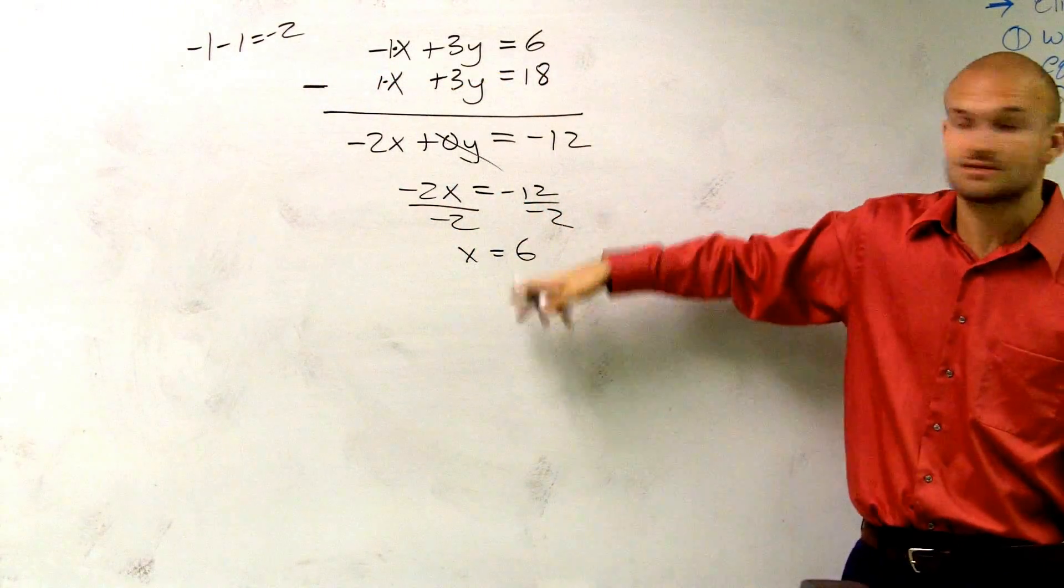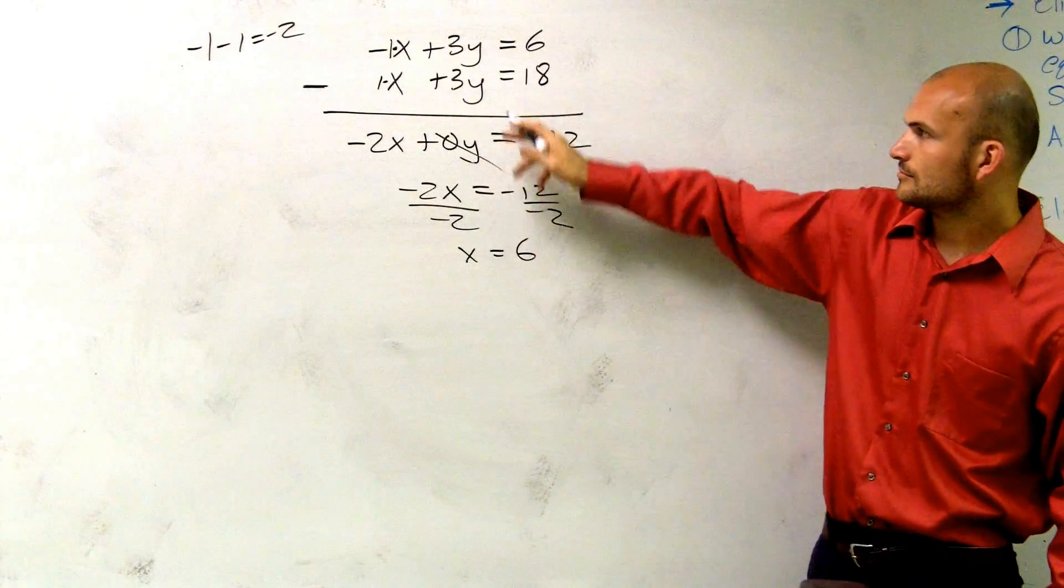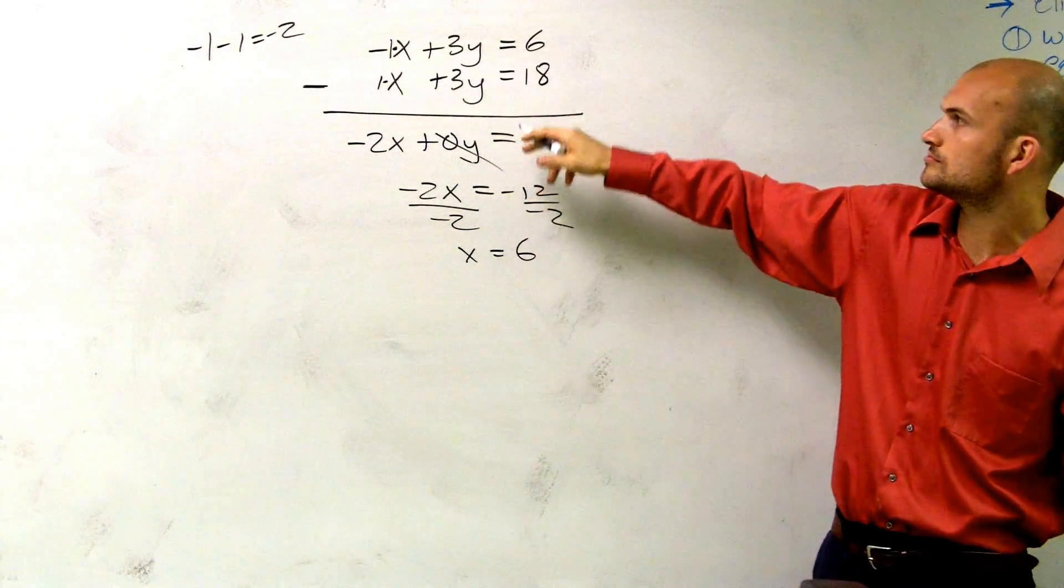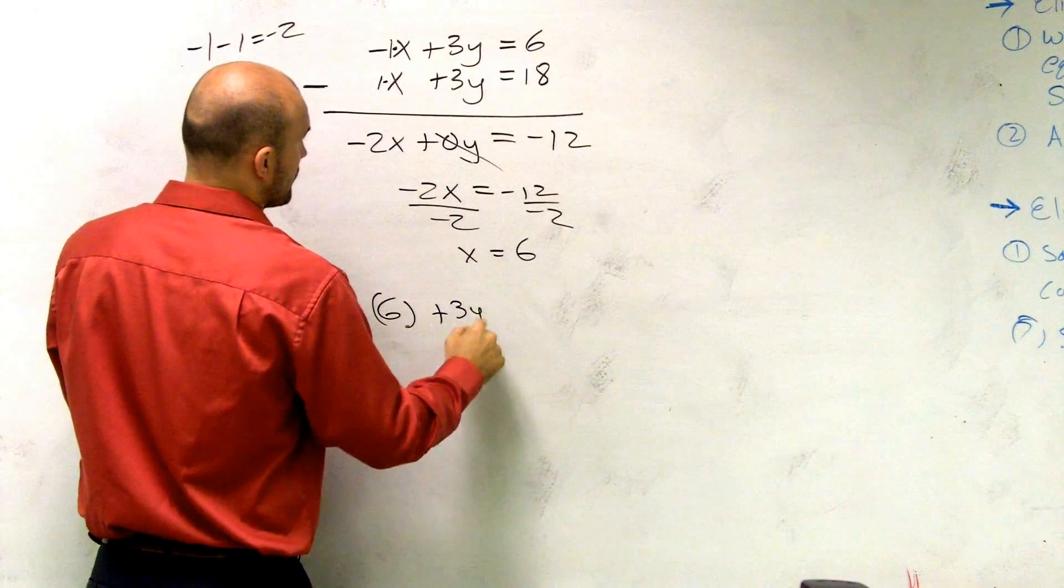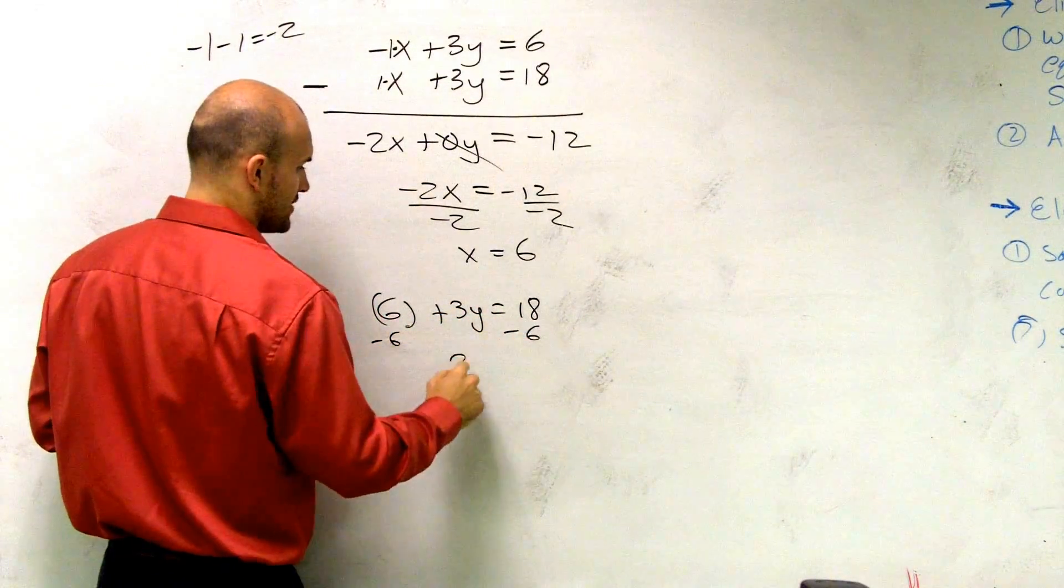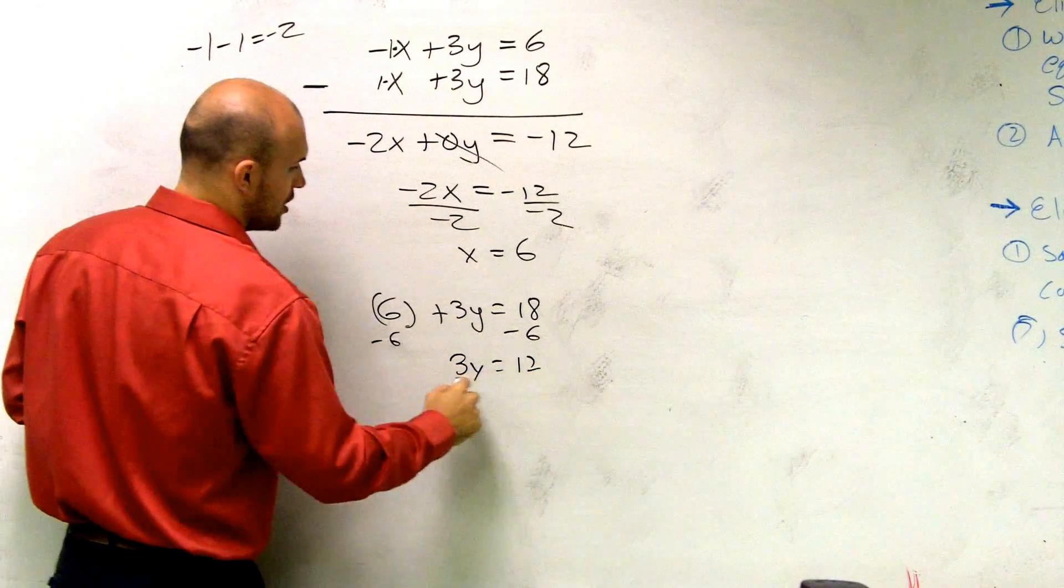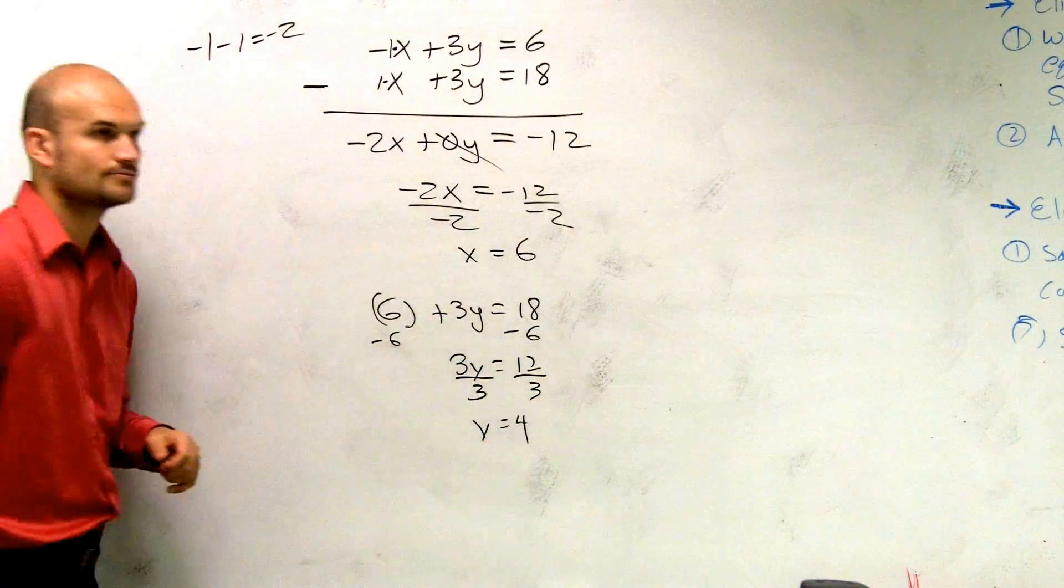Now I know what x equals. I'm going to plug that back into one of those equations. I'll plug it into this problem, the lower equation. So I'd say 6 plus 3y equals 18. Subtract 6. You get 3y equals 12. Divide by 3. Y equals 4.